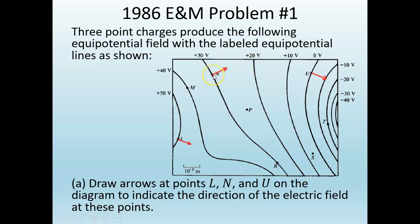Second, notice that the vectors themselves are pointing in the direction of decreasing electric potential. The electric field tells you the direction that a positive test charge would move. A positive test charge moves from higher potential to lower potential, just as a massive particle moves from higher gravitational potential energy to lower gravitational potential energy — in other words, downward in most places on Earth.